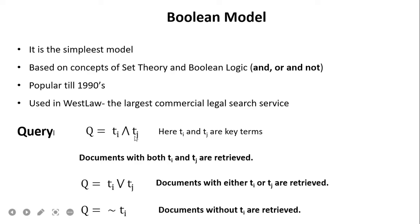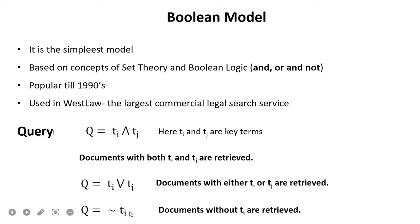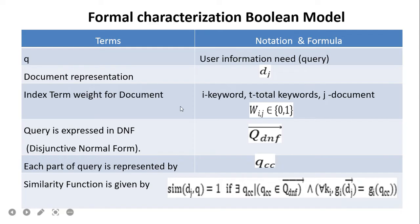For example, if the query is ti AND tj, where ti and tj are keywords present in the query, then documents with both ti and tj are retrieved. If the query is ti OR tj, documents with either ti or tj are retrieved. When the query is NOT ti, documents without ti are retrieved.